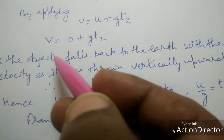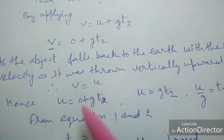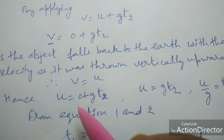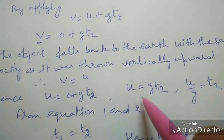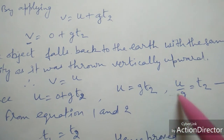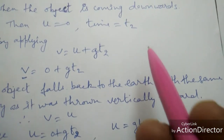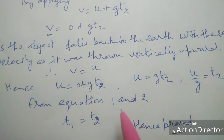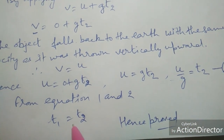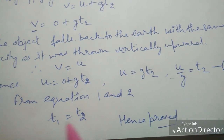Hence we use u instead of v. The equation becomes u = 0 + g·t2. Solving this we get t2 = u/g. This is the second equation. From the first equation and the second equation we get t2 = t1. Hence proved.